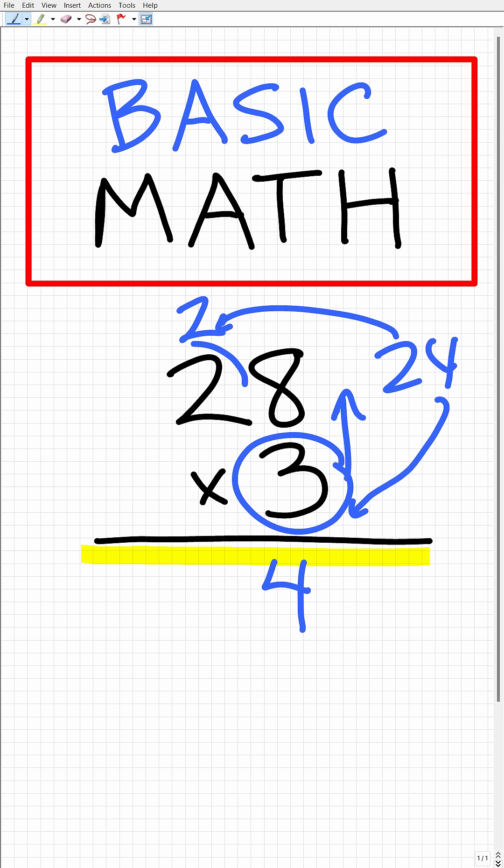Now we're going to take this three and multiply it by two. So three times two is six. And then we'll add this two and that is eight. So that will go right there. So the answer, we have 28 times three, the answer is 84.